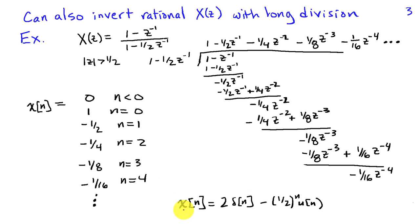In this particular case, we can actually see a pattern. And the pattern is that x of n equals 2 delta of n minus 1 half to the n u of n.